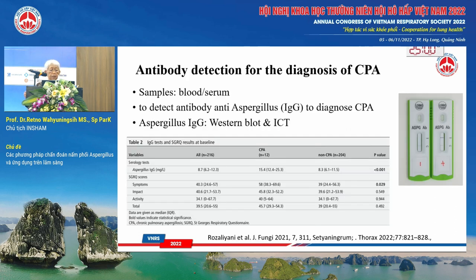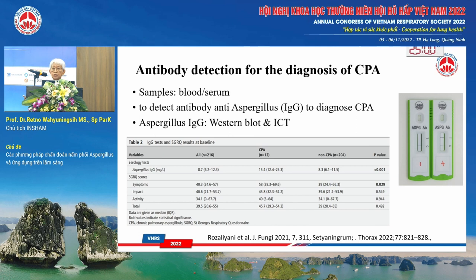Antibody detection is used for chronic diseases such as CPA. Samples are usually serum. Several studies conducted in my country suggest this can be used for the proven diagnosis of CPA. However, commercially available kits for fungal disease diagnosis are limited to only a few producing countries.